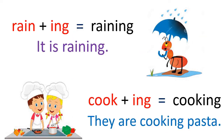The next examples use rain — raining, and cook — cooking. For example: It is raining. They are cooking pasta. In the first sentence, is is used with the singular subject it, and are is used with the plural subject they.